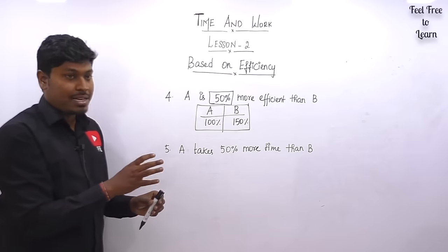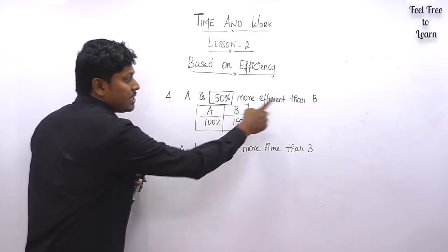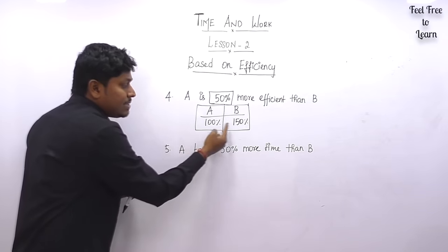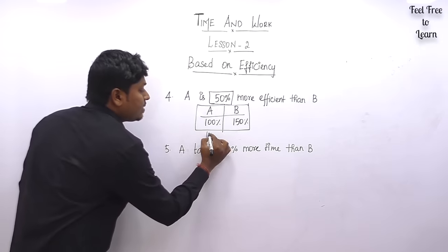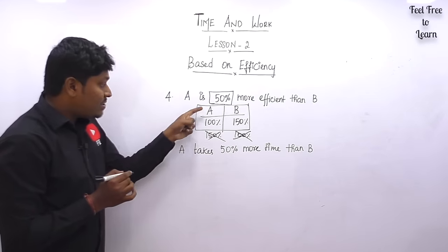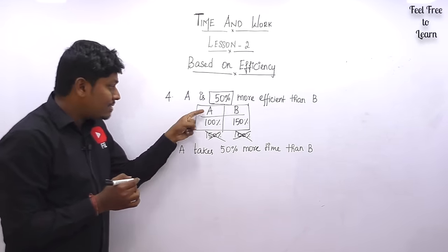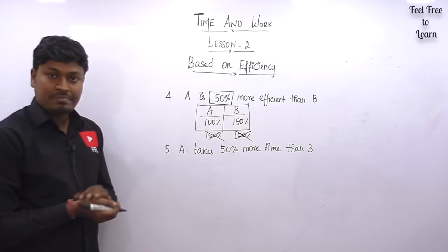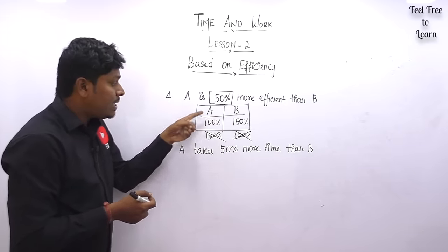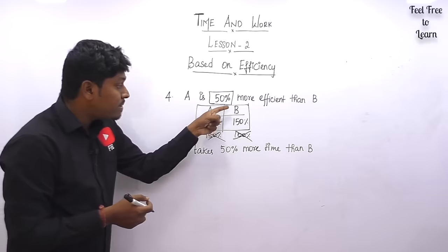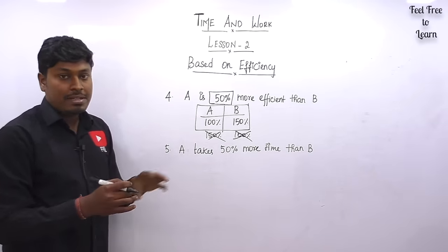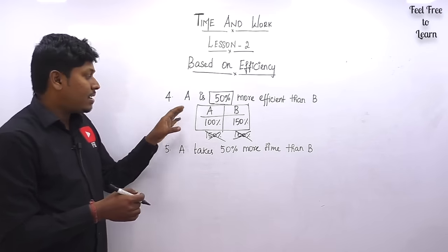A is 50 percentage more efficient: if B is 150 and A is 100 percentage, that means A is 50 percentage more efficient than B. Do not write it the other way round — 150 for A and 100 for B — that is wrong. A should be 100, B should be 150. If A is 80 percent more efficient, B should be 180 and A should be 100. If A is 90 percentage more efficient, B should be 190 and A should be 100.